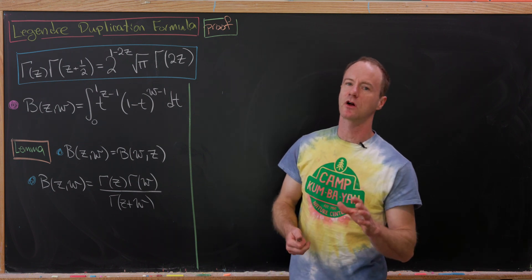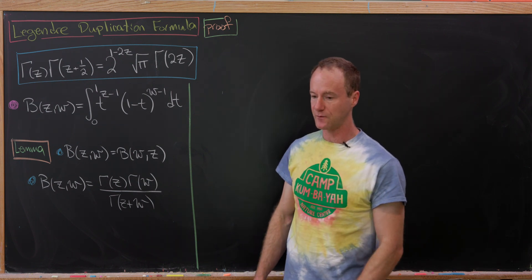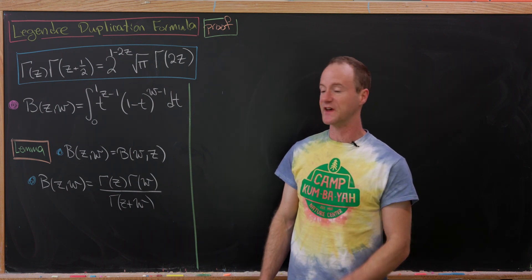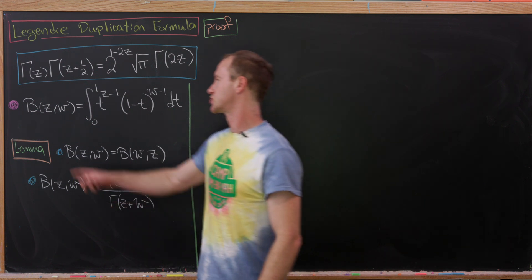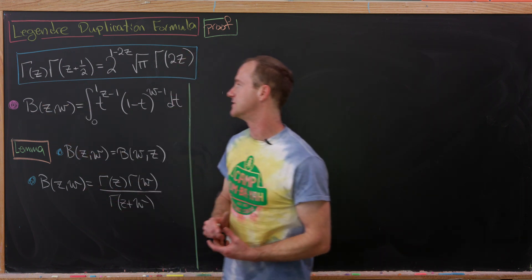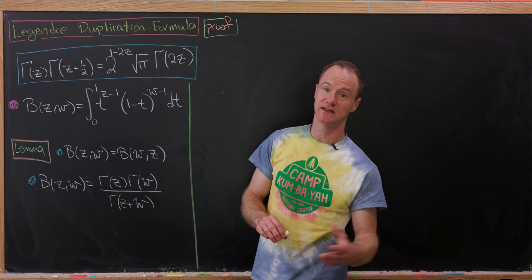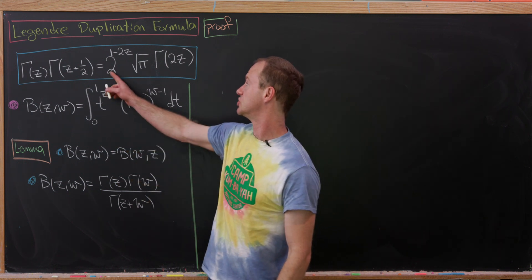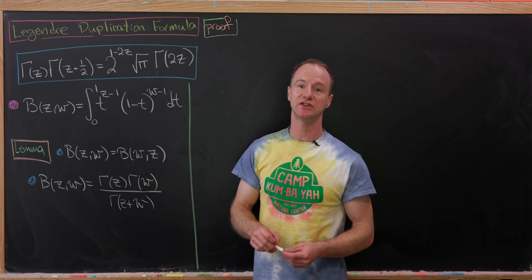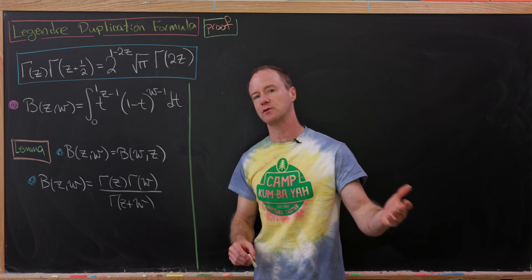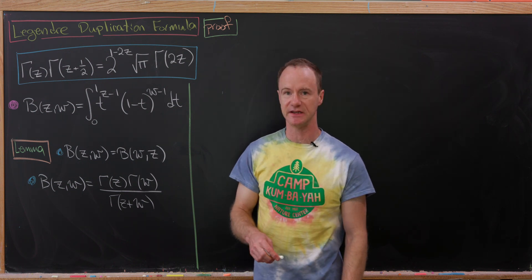Today we're going to look at a nice formula called the Legendre duplication formula for the gamma function. In particular, we'll show that gamma(z) times gamma(z + 1/2) is equal to 2^(1 - 2z) times the square root of pi times gamma(2z).